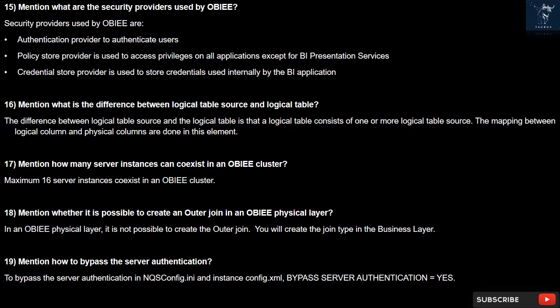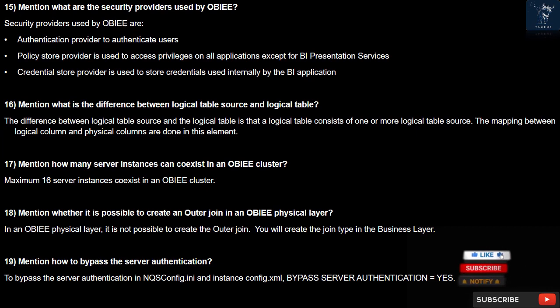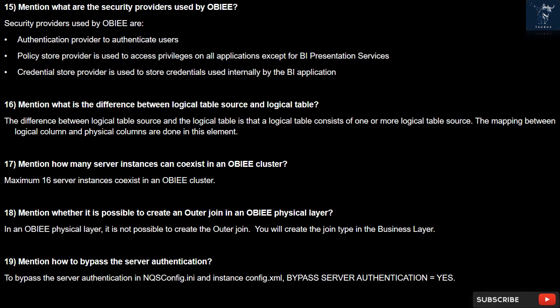Question 16: What is the difference between logical table source and logical table? A logical table consists of one or more logical table sources. The mapping between logical columns and physical columns is done at the logical table source element.